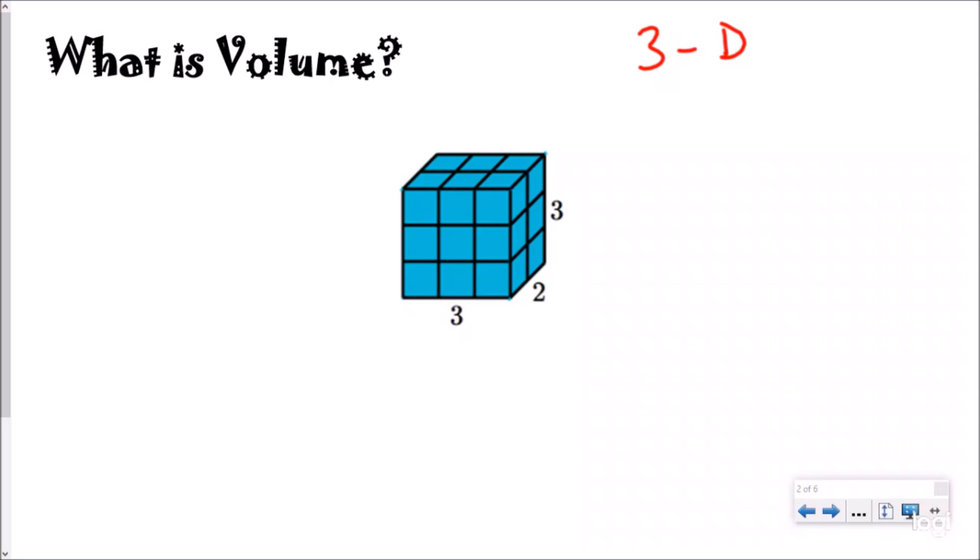When we measure volume, we measure in cubes. Instead of area with square units, we do volume with cube units. A lot of times they'll show you this picture with a rectangular prism. We're really focused on rectangular prisms with a picture of cubes. The long way to do this would be to count all the cubes that make up the shape.